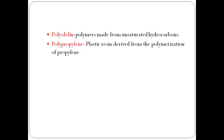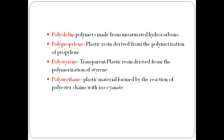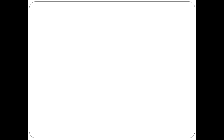Polypropylene is a plastic derived from the polymerization of propylene. Polystyrene is a transparent plastic resin derived from the polymerization of styrene — from the word itself you can find the answer. Polyurethane is a plastic material obtained by the reaction of polyester chains with isocyanate.